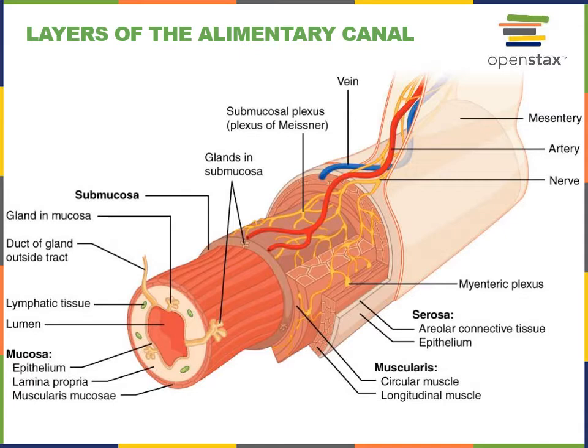Superficial to the submucosa is the muscularis, which consists of primarily single unit smooth muscle tissue. Then superficial to the muscularis is the serosa, which functions to anchor the alimentary canal to surrounding tissues to help stabilize the position of the digestive organs and also provides a route for the travel of large blood vessels and nerves.